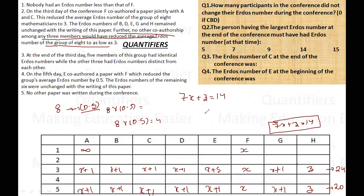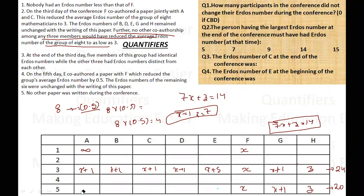We know that only Paul Erdős has an Erdős number of zero, so z cannot be zero and x cannot be zero. Under these constraints, the only integer solution is z = 7 and x = 1. This is the only valid solution, so six people get x plus one which equals two, one gets x which is one, and one gets z which is seven.